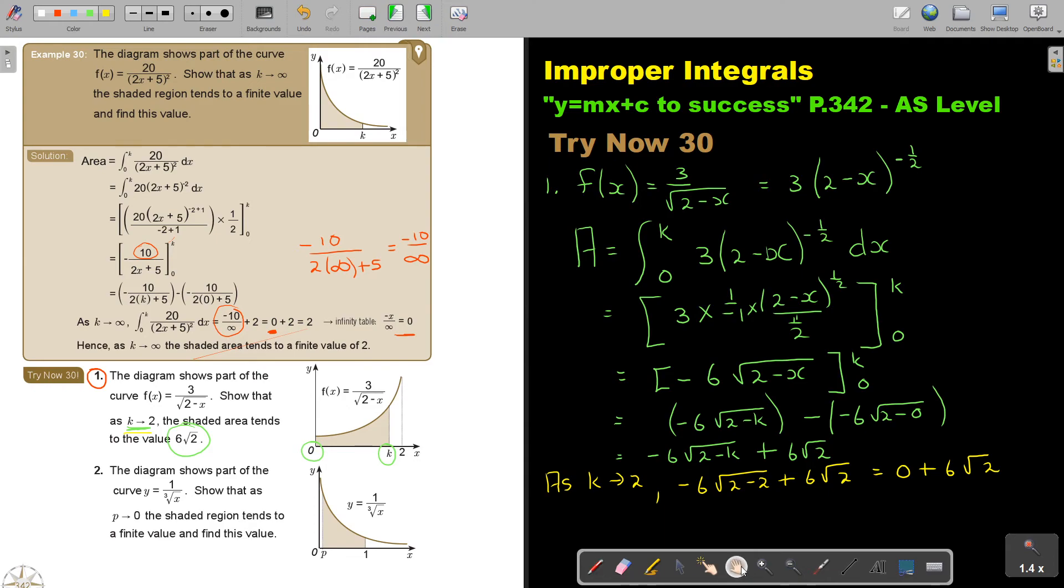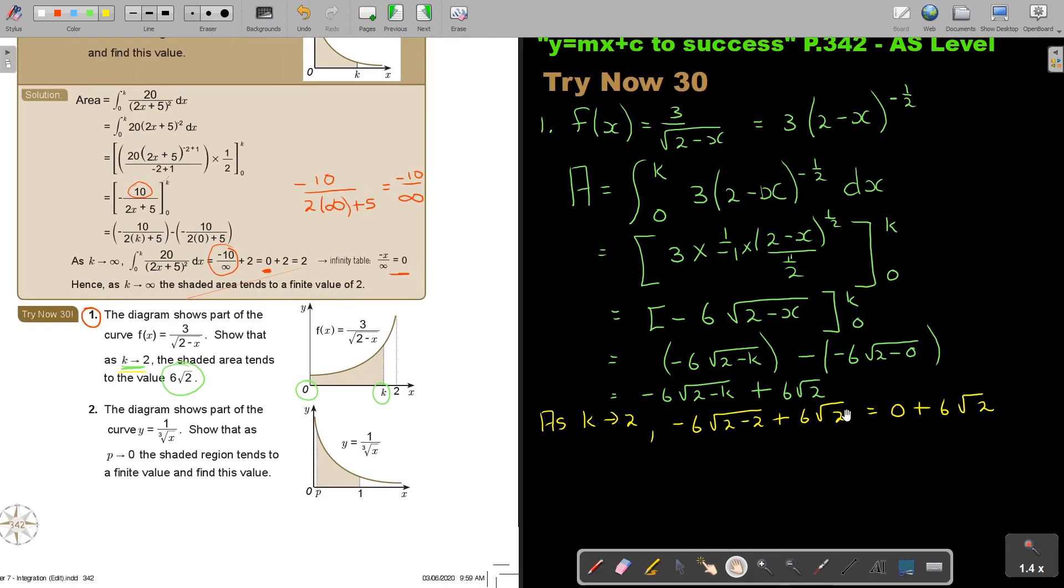So I can end off by saying, hence, as k is striving to 2, the shaded area tends to the finite value of 6 square root 2. And that's how you do it.